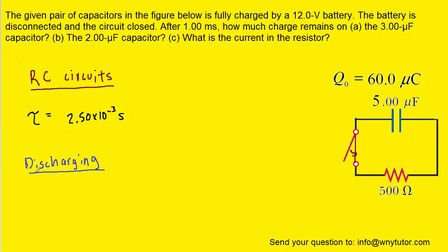For a discharging RC circuit, the following equation holds true: the charge q at a particular time equals the original charge stored on the capacitor times e to the negative t over the time constant. We have the time constant, we have the original charge, and the time is stated in the question as 1 millisecond, which is 1×10⁻³ seconds. So we plug in all three known values to find the charge after 1 millisecond.